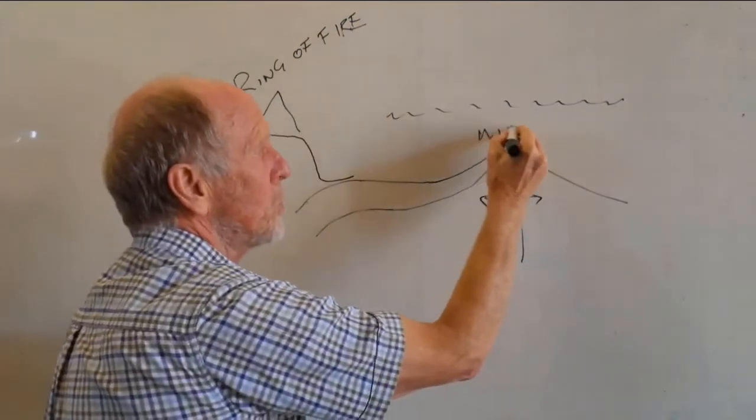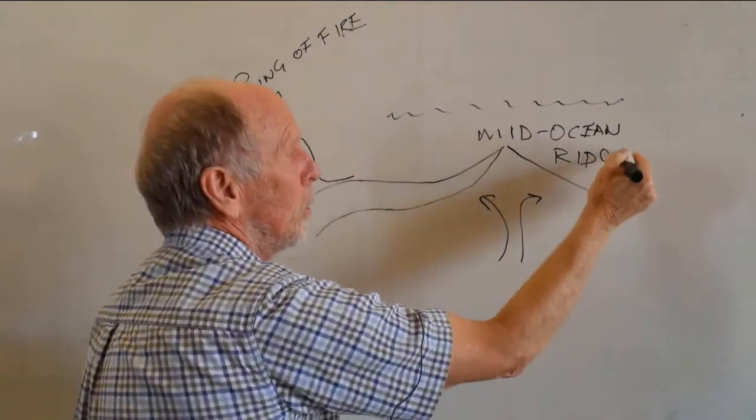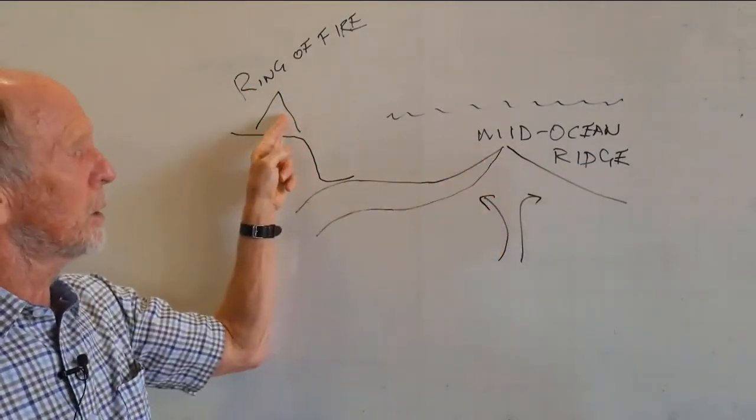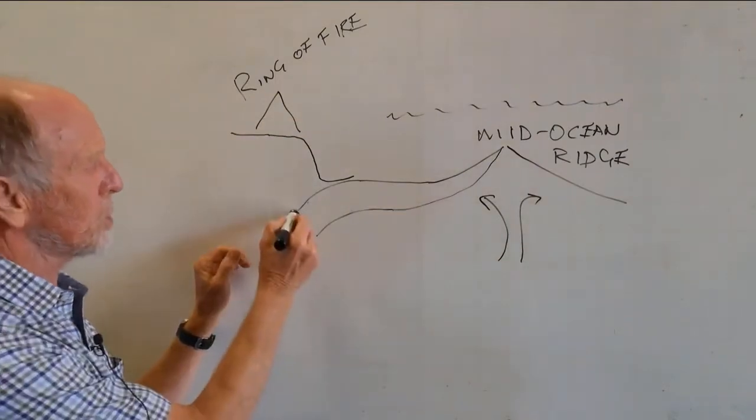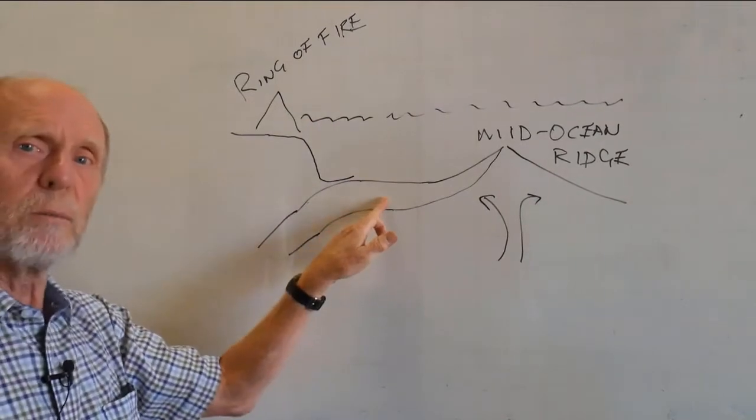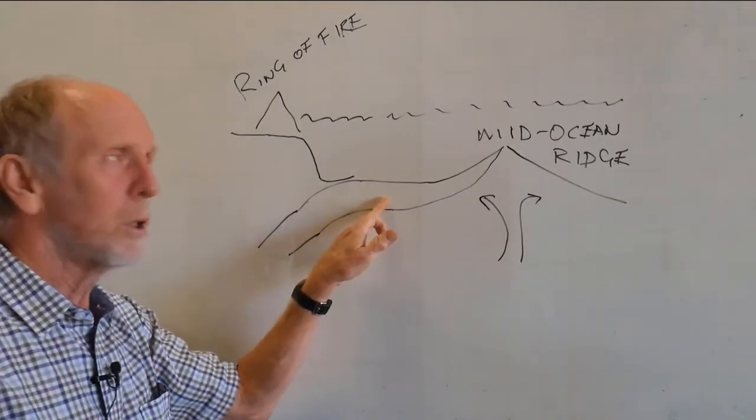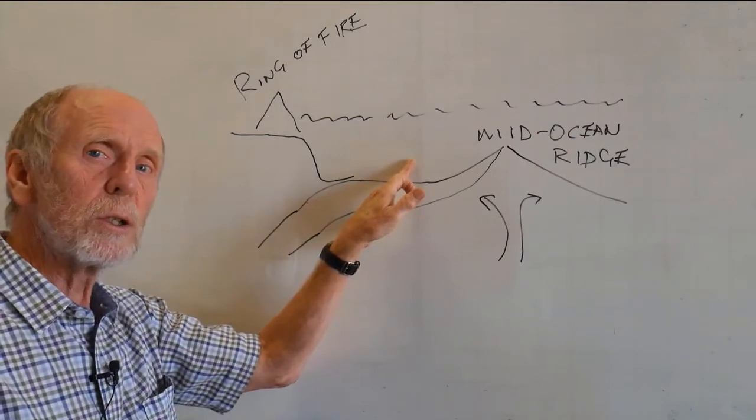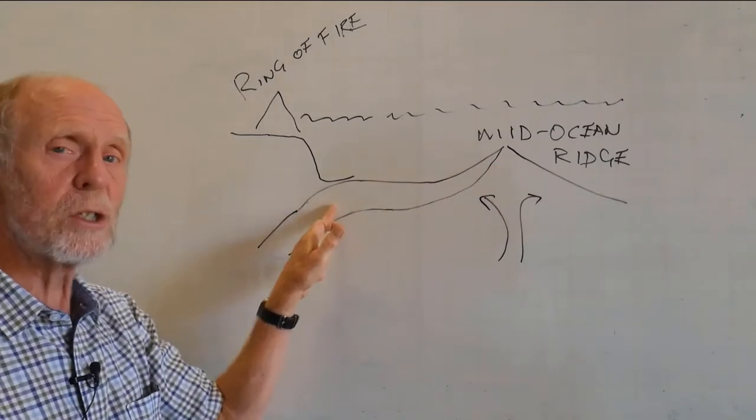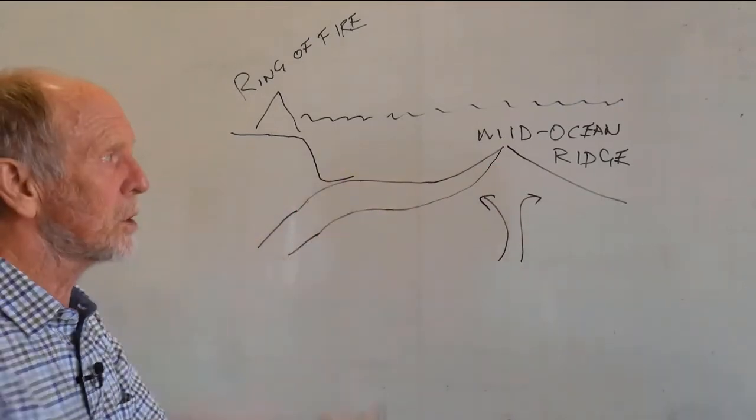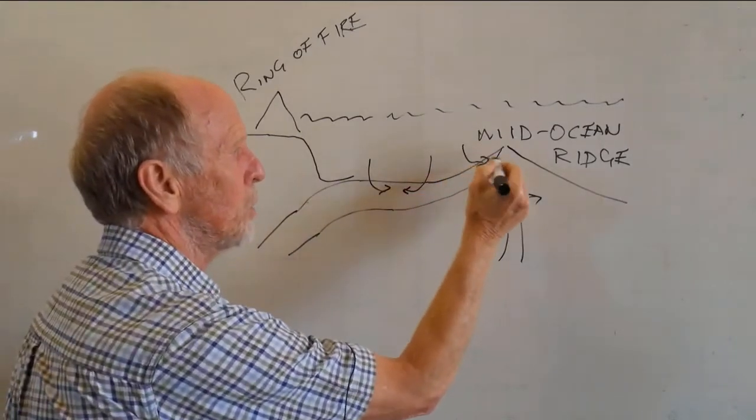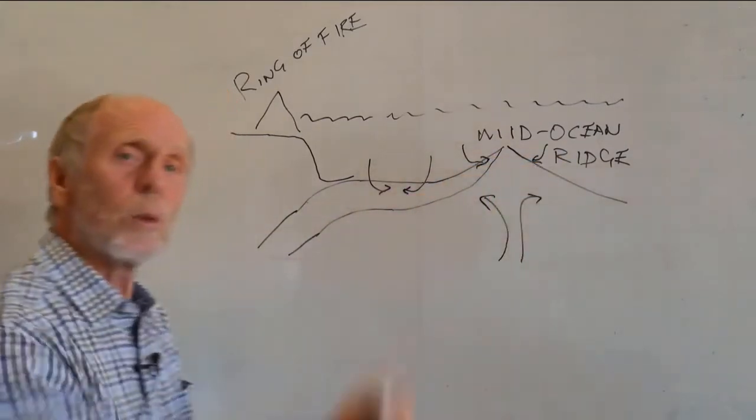This is a mid-ocean ridge. Igneous rocks, basalts are produced here, and they're also produced here. But the extra complication now is the ocean crust that you've made at the mid-ocean ridge has been exposed during its lifetime on the ocean floor, which can be on average about 100 million years, from manufacture to destruction. And water gets into this new crust, both at the ridges and elsewhere along the ocean floor.